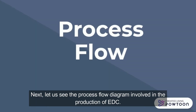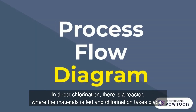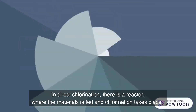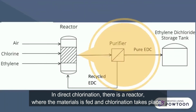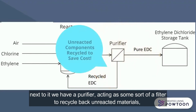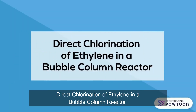Next, let us see the process flow diagram involved in the production of EDC. In direct chlorination, there is a reactor where the materials are fed and chlorination takes place. Next to it, we have a purifier acting as a filter to recycle back unreacted materials, and lastly the storage tank to store our EDC.